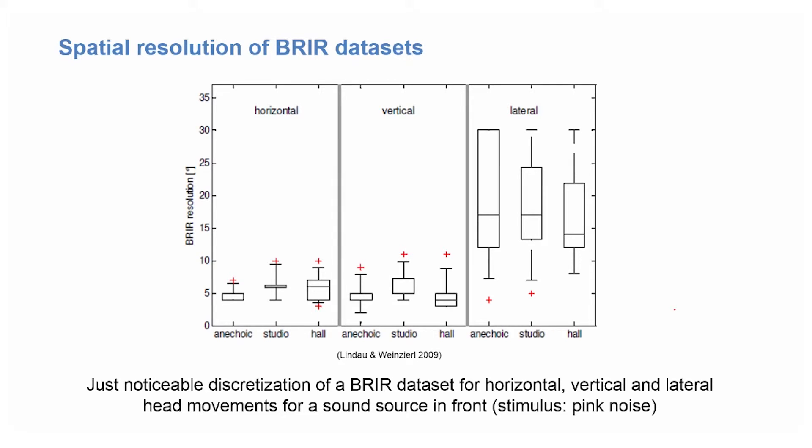The results show the just noticeable resolution of a data set of binaural room impulse responses, as a distribution of all subjects involved, with the median, the interquartile range and the extreme values. You can see that it makes little difference whether these data sets are recorded in an anechoic or in a reverberant environment, and that it also makes little difference whether the sound field is adapted to horizontal or to vertical head movements. Both distributions show just noticeable resolutions between 2 degrees for the most sensitive subjects and 10 degrees for less demanding listeners.